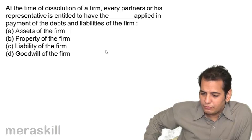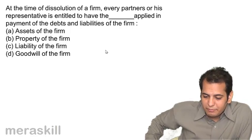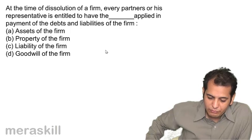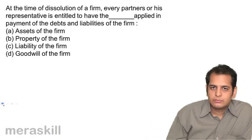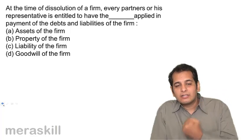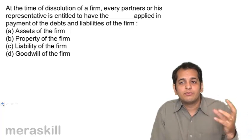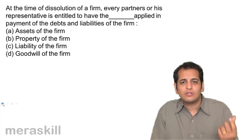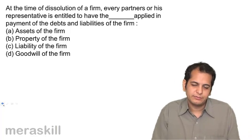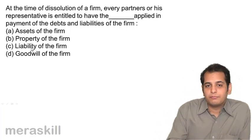At the time of dissolution of a firm, every partner or his representative is entitled to have a certain thing applied in payment of debts and liabilities of the firm. Options are: assets of the firm, property of the firm, liability of the firm, or goodwill. The answer is the property of the firm, since liability cannot be applied and goodwill has no value on dissolution.